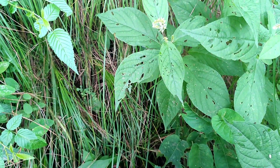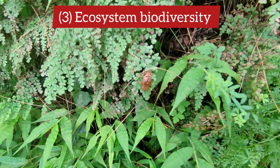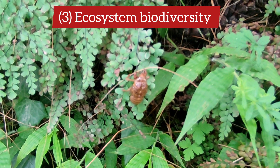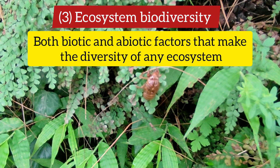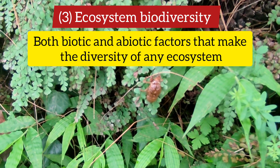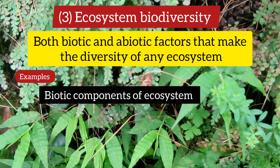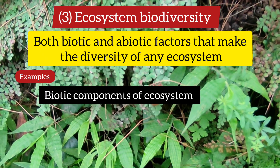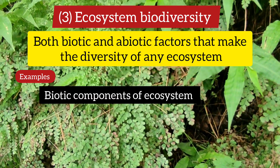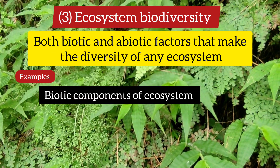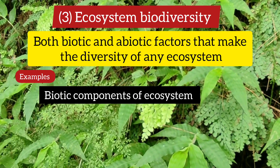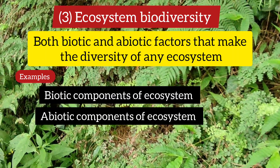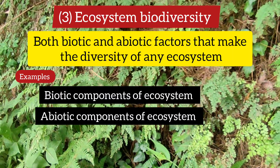The third level of biodiversity is ecosystem biodiversity. Ecosystem biodiversity means the diversity created by both biotic and abiotic factors in any ecosystem. For example, here in this moist temperate forest you can see biotic and abiotic components. Biotic components include plants, animals, insects, birds, arthropods, and decomposers such as bacteria and fungi. Abiotic components include light, water, soil, moisture, and temperature.